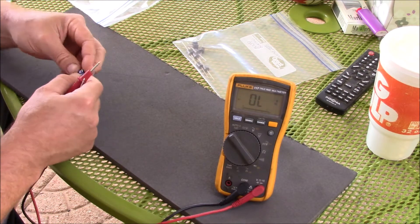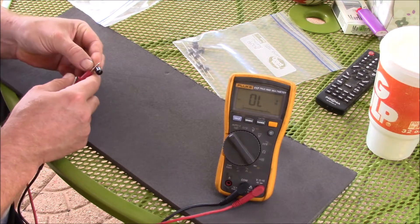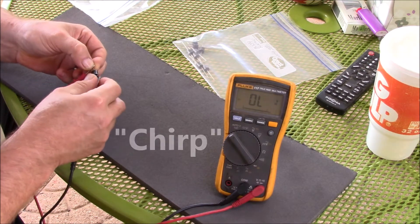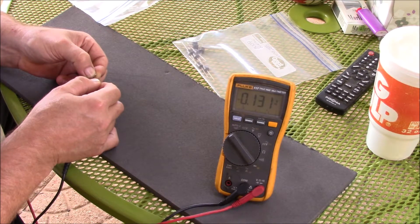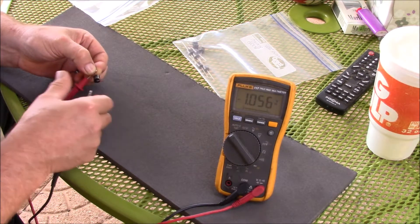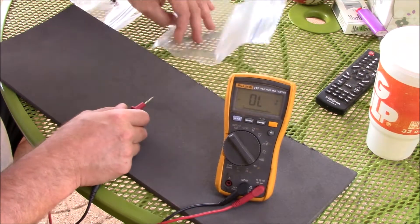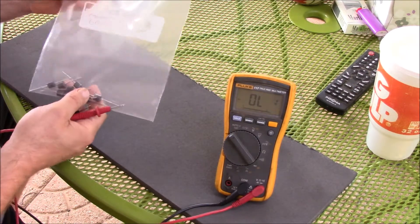I swap the leads around. Listen. Hear that chirp? 0.0131. That's the Renogy diode that came with the solar suitcase.